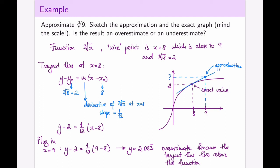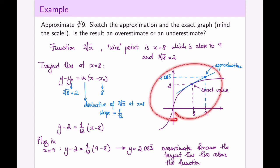The linear approximation method always involves one function, a nice point, a tangent line, and plugging in the nearby point to find the approximation. Draw the graph — it is very convenient for understanding the situation, and it's essentially the only way to determine whether you have an overestimate or underestimate.